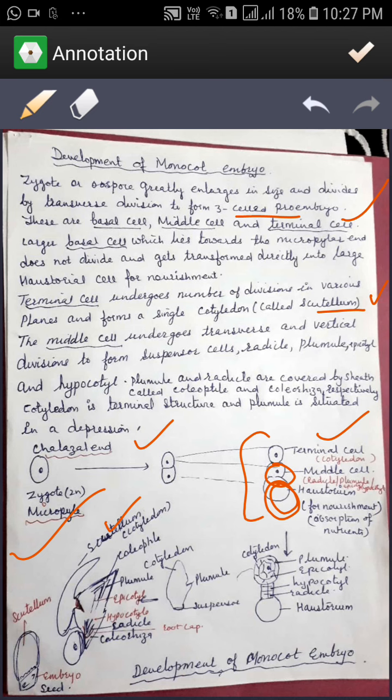Cotyledon is a terminal structure and plumule is situated in depression. Here, this is the haustorial cell.